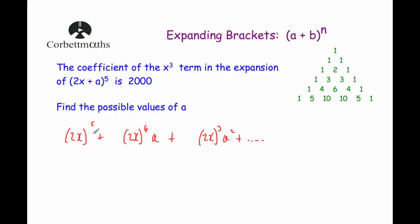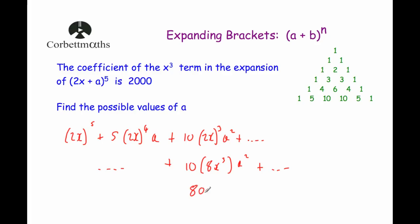The power is 5 so we use the row 1, 5, 10, 10, 5, 1 from Pascal's triangle. Focusing on the x cubed term: we have coefficient 10, and (2x)³ = 8x³, so the term is 10 times 8x cubed times a squared, which gives 80a squared x cubed. Moving a squared to the front, the coefficient of x cubed is 80a squared.